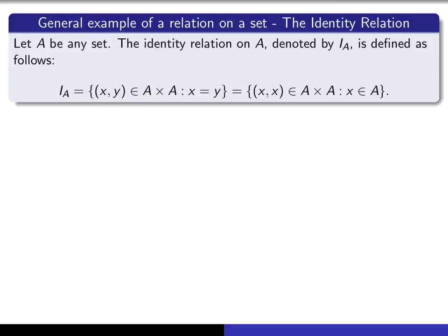Or equivalently, we could write it as the set of all ordered pairs of the form (x, x) in A cross A, as x varies over the set A.